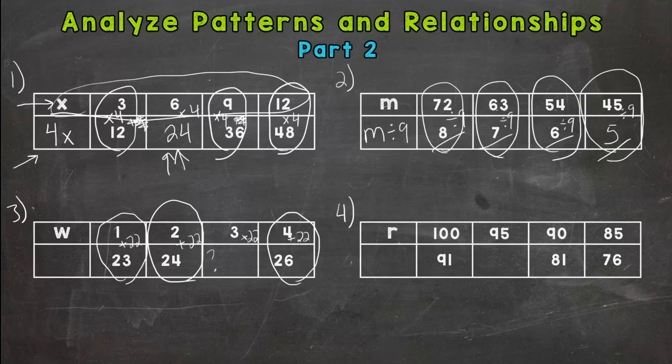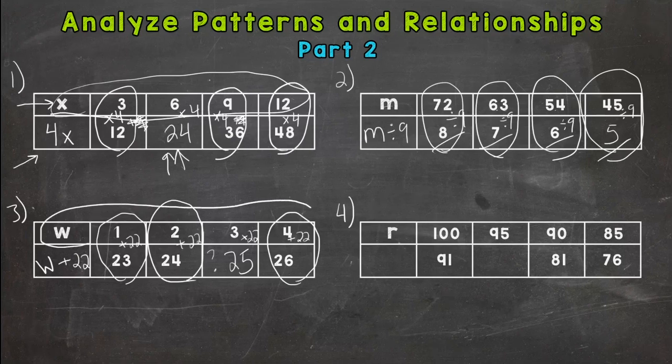So let's apply our rule to our missing piece here. 3 plus 22 does give us 25 for our missing piece. And our rule is W plus 22 gives us our corresponding terms below. So if we take these W's and we add 22, we get the numbers below.